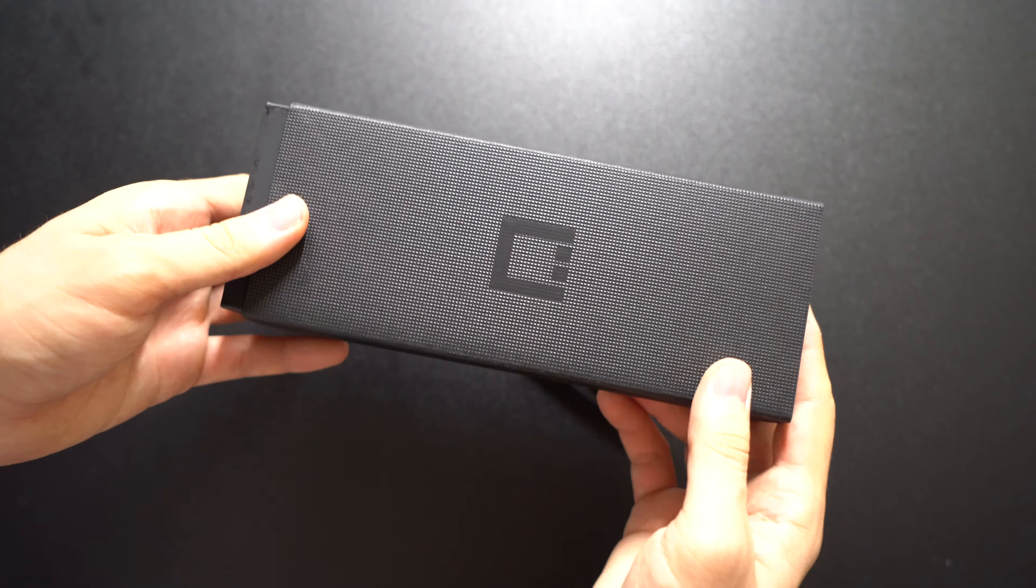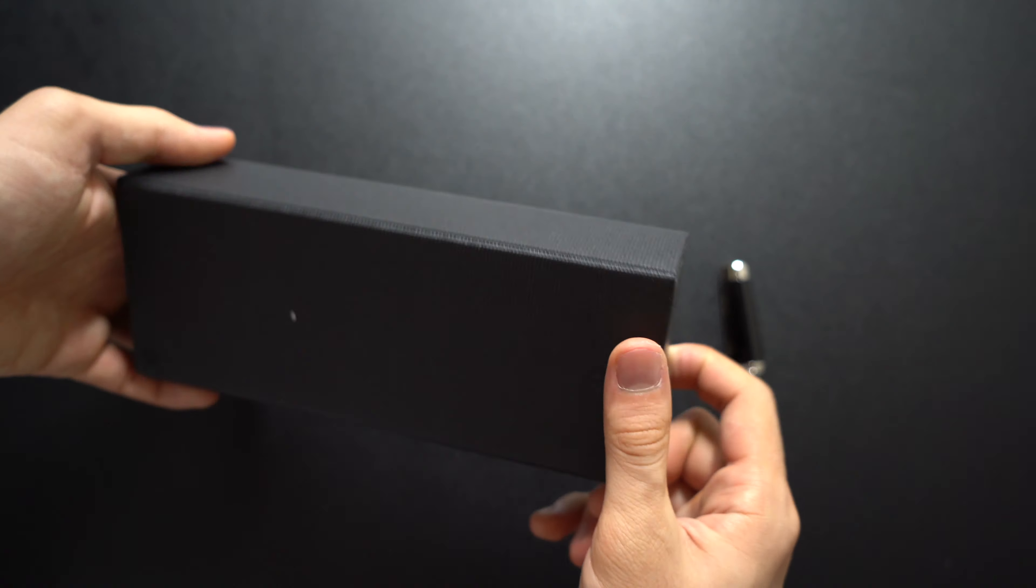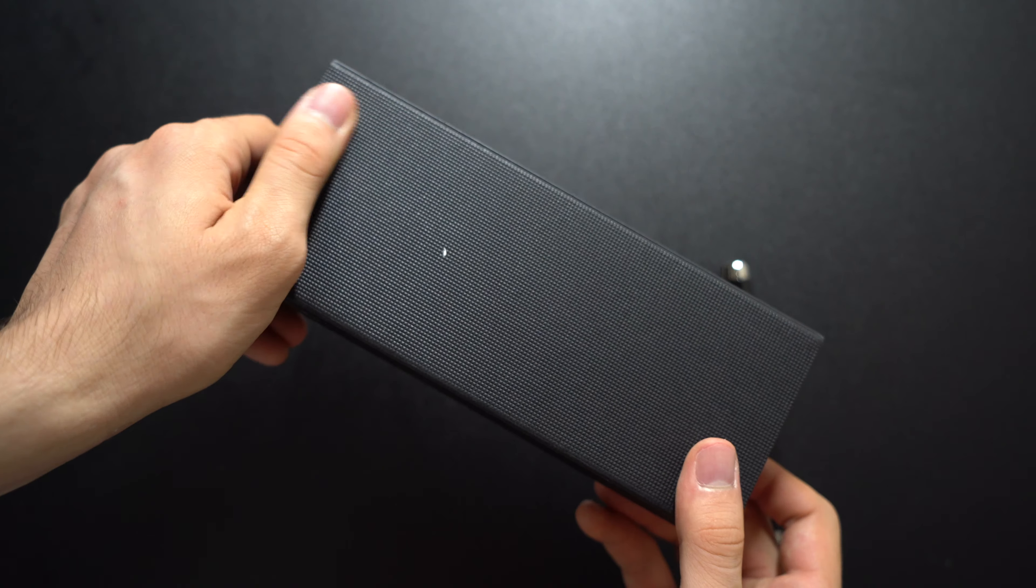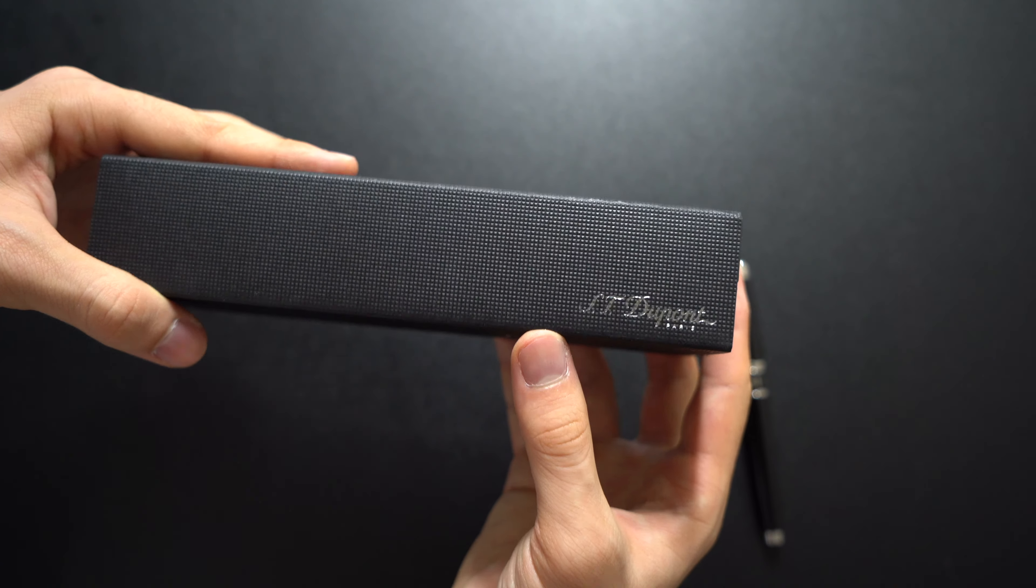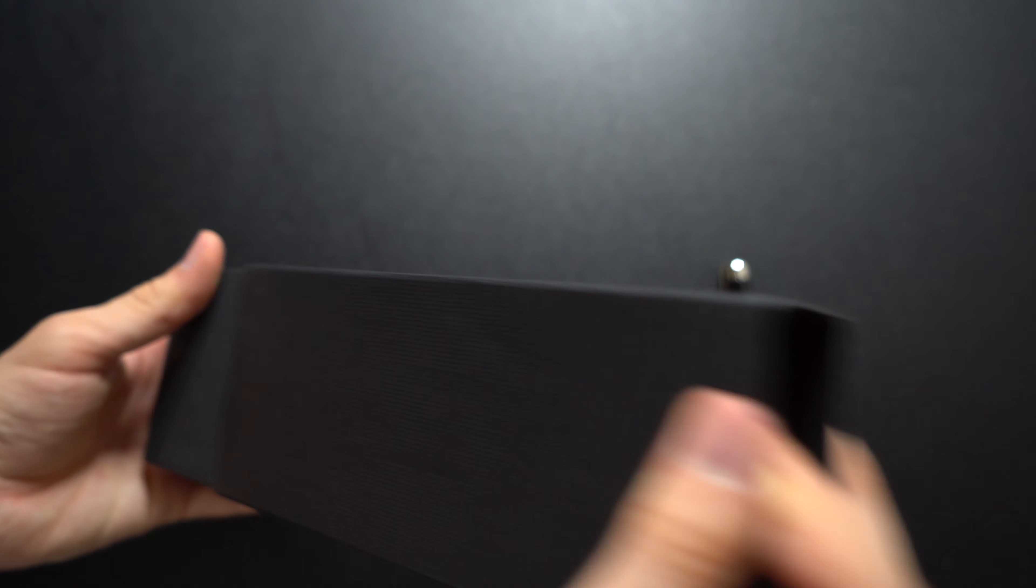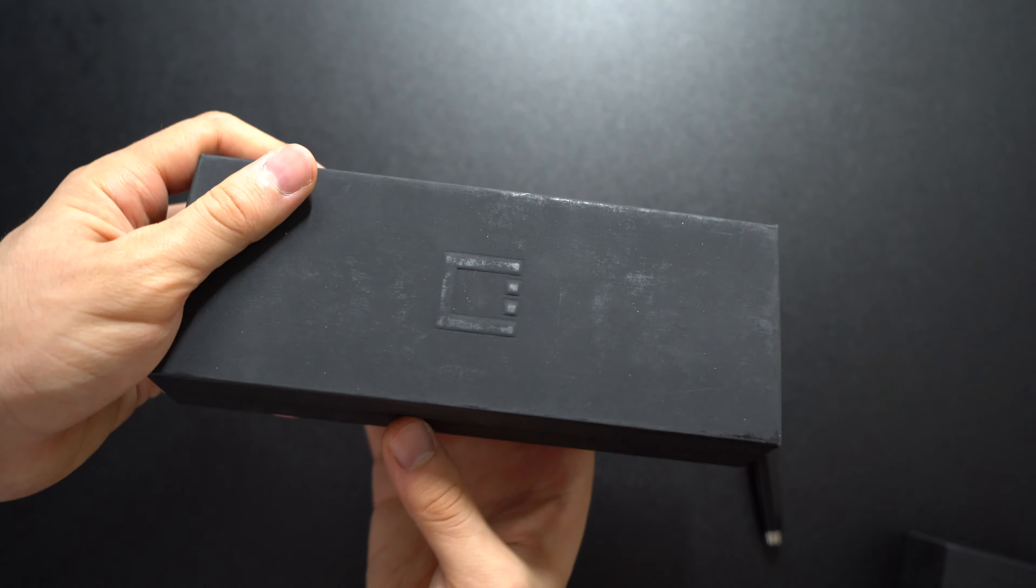Speaking of the package, let's get into the packaging the pen comes in. It comes in this cardboard box. You have the logo and the D-Logo on top which is specific for the D-Link I think.